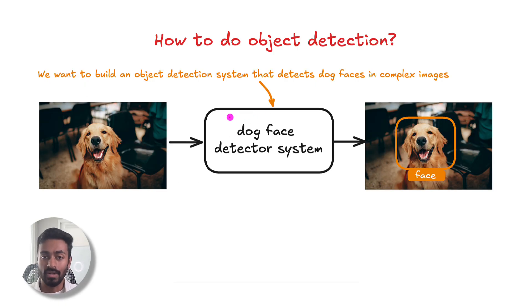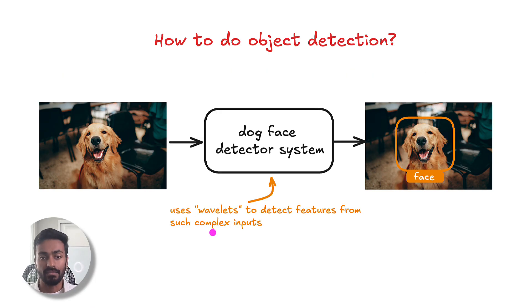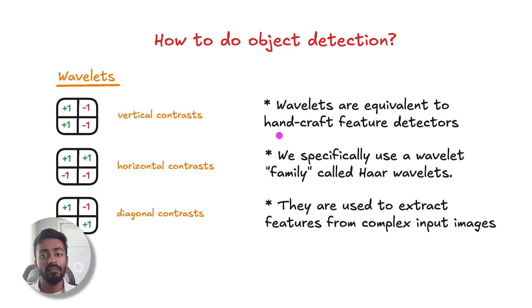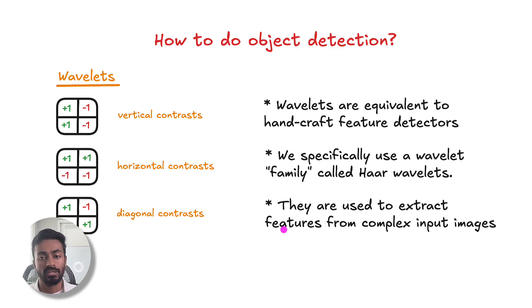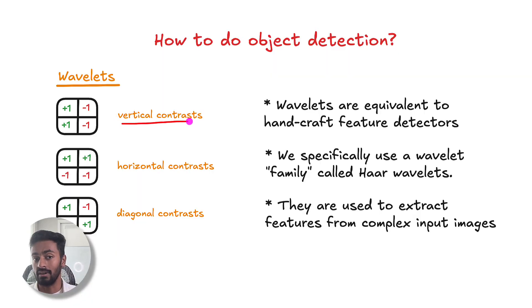We can illustrate this by building a dog face detector system where the input is going to be some complex image. And because the input is a complex image, we could use something called wavelets to detect some features from this image. Now, essentially, wavelets are equivalent to handcraft feature detectors. We're specifically going to use a family of wavelets commonly called the Haar wavelets, which are used to extract features from complex input images. For example, we're going to use a 2x2 wavelet that detects vertical contrast information in the image. Similarly, this will detect horizontal contrast and this will detect diagonal contrast in an image.